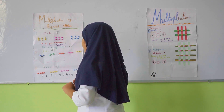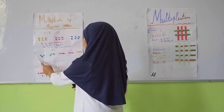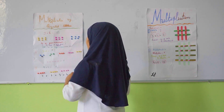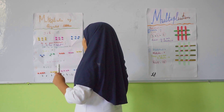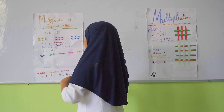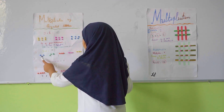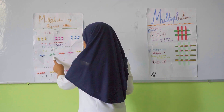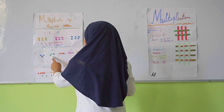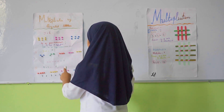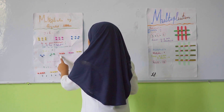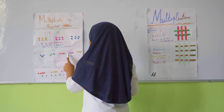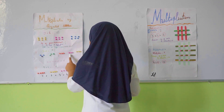Now another question: 5 multiply by 3. So there are 5 groups and in each group there are 3 things. So here 3 plus 3 is 6, 6 plus 3 is 9.